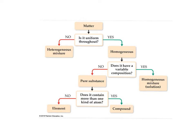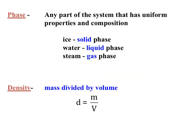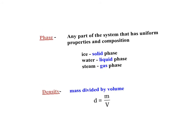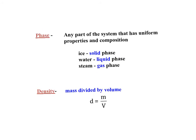For a pure substance, the question is whether it contains more than one kind of atom — is it an element or a compound? Examples: sulfur is an element; carbon dioxide is a compound. Also as part of our review: phases. You can have the solid, liquid, or gas phase of any substance — for H₂O we call it ice, water, and steam. A phase is any part of the system with uniform properties and composition.